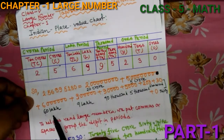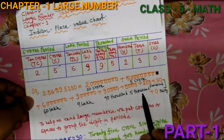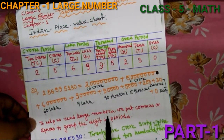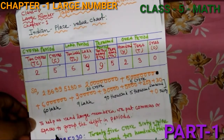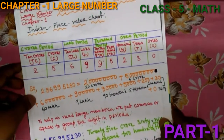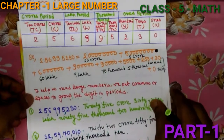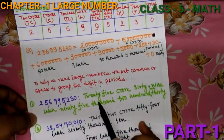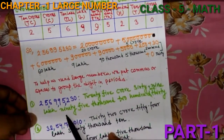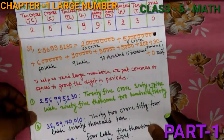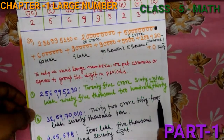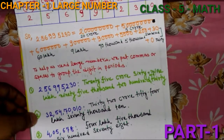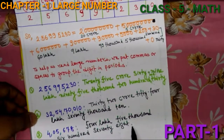For example, a number is placed as: twenty crore, five crore, sixty lakh, nine lakh, ninety thousand, five thousand, two hundred, thirty. To help us read large numbers, we put commas to group the digits in periods. So this number is read as: twenty-five crore, sixty-nine lakh, ninety-five thousand, two hundred and thirty. Another example: thirty-two crore, fifty-four lakh, seventy thousand, ten. And another example: four lakh, five thousand, six hundred seventy-eight.